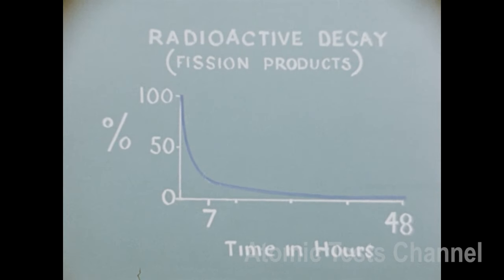Radioactive decay of fission products, fallout, is another protective factor. Radioactivity decays naturally so that about 10% remains after seven hours, about 1% after 48 hours, and about one-tenth of 1% after two weeks.